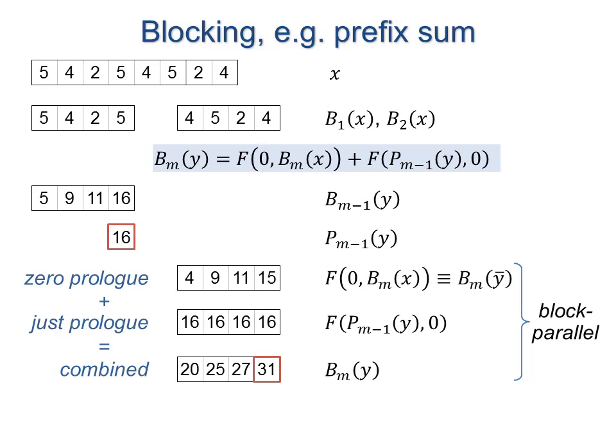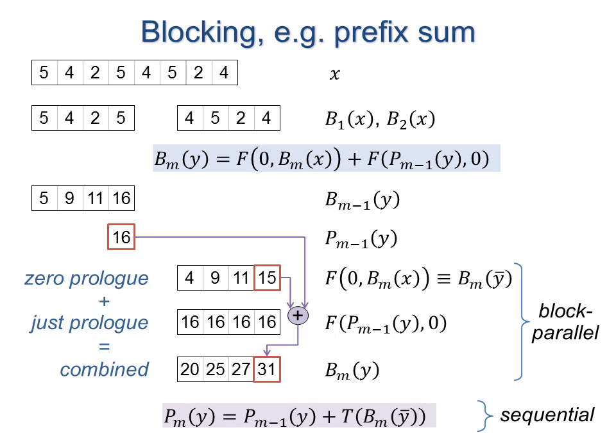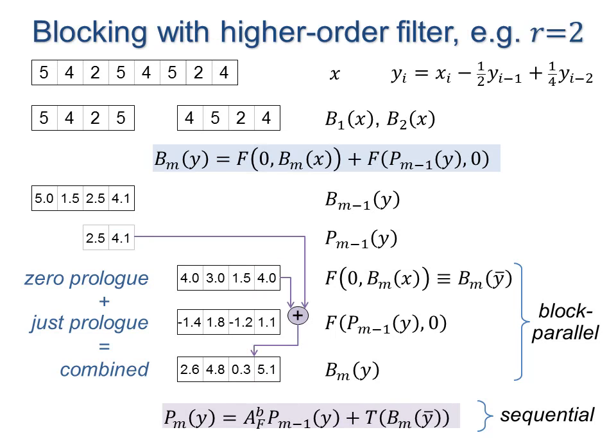Computations can be performed in parallel across all blocks, except for the prologue transfer across blocks, which here forms a chain of additions. The computation for a high-order filter is similar. The prologue vectors are longer, and there is now a matrix to transfer the previous prologue across a block. This small precomputed matrix depends only on the filter weights.